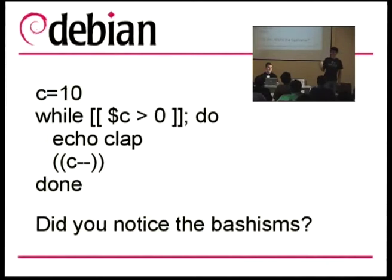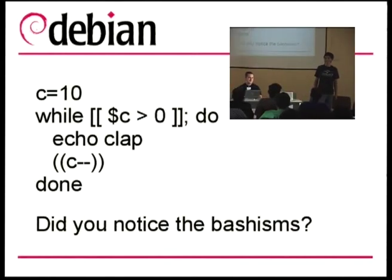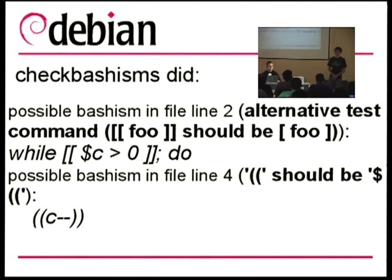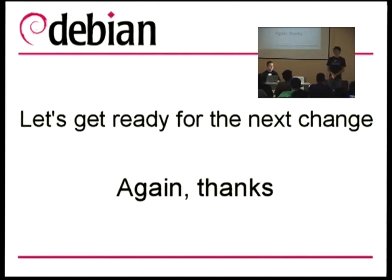Did you notice the bashisms in the slides, by the way? There are two bashisms. The first one is the double brackets, and the second one is the missing dollar sign. Not just the missing dollar — because if you just add the missing dollar, the variable won't be changed. You have to change it to: C equals, dollar sign, and the rest. So that's it. Thank you. Let's get ready for the next change.